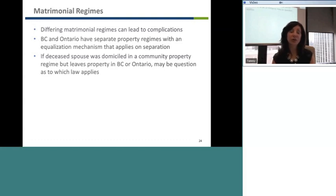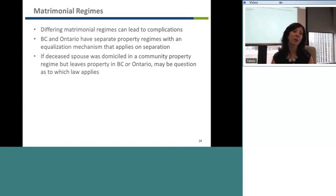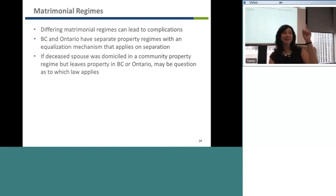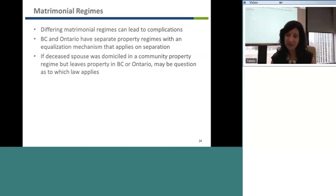Richard mentioned that in B.C. they're looking at a two-year cohabitation period in their new legislation. In Ontario, we're still looking at three years of cohabitation in a relationship of some permanence — not merely roommates, but a conjugal relationship — or if we've had a child together, that's good enough after a year. Richard, if you want to tell us a little bit about B.C., I'd appreciate it.